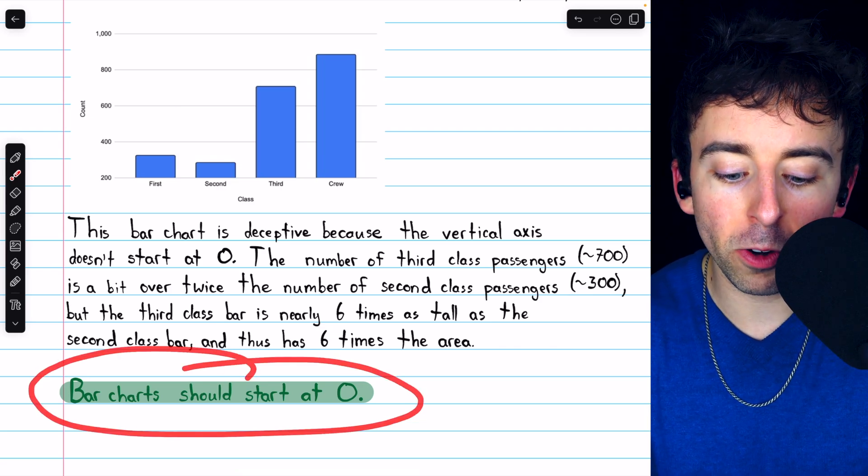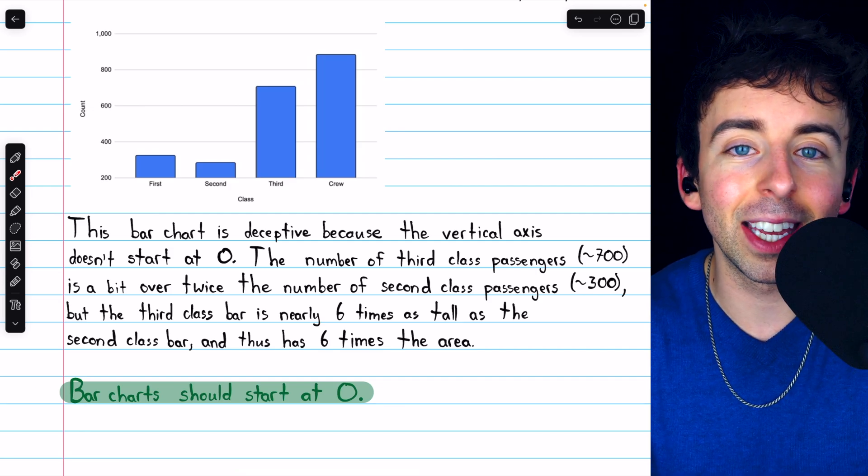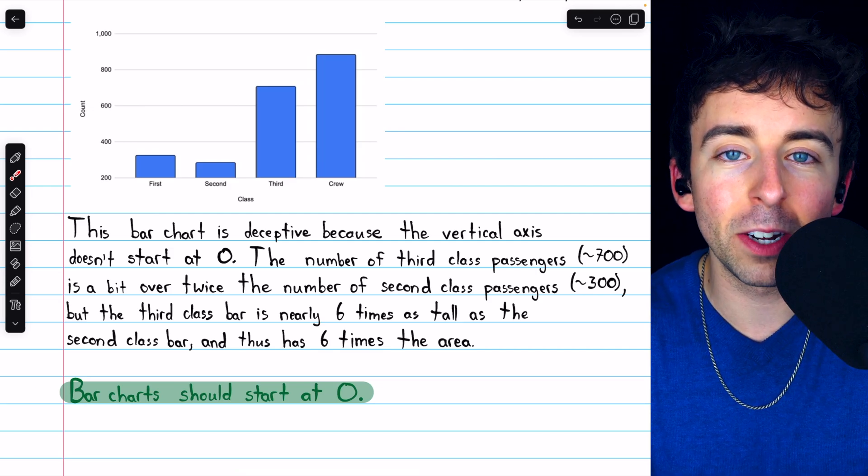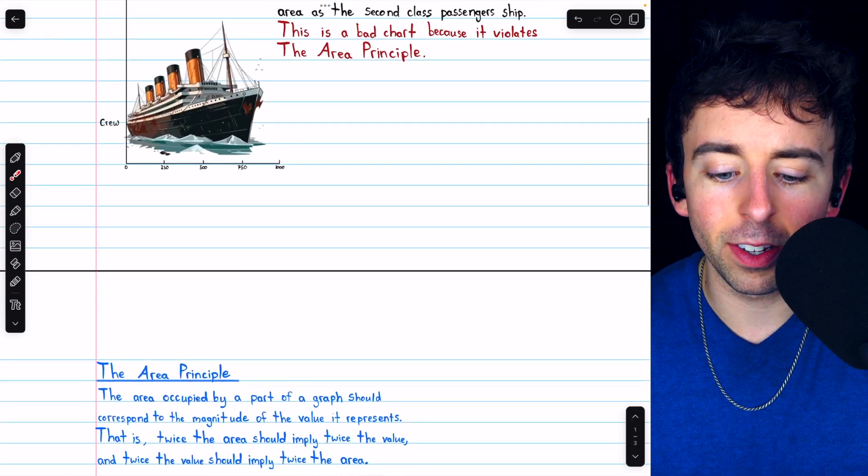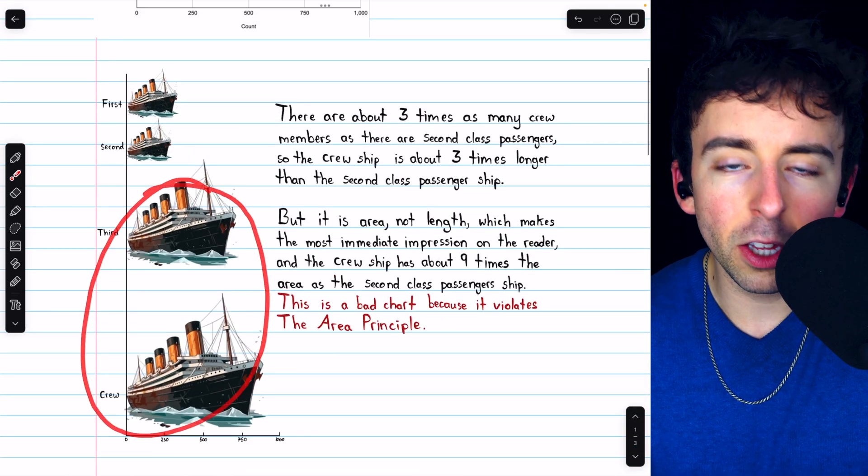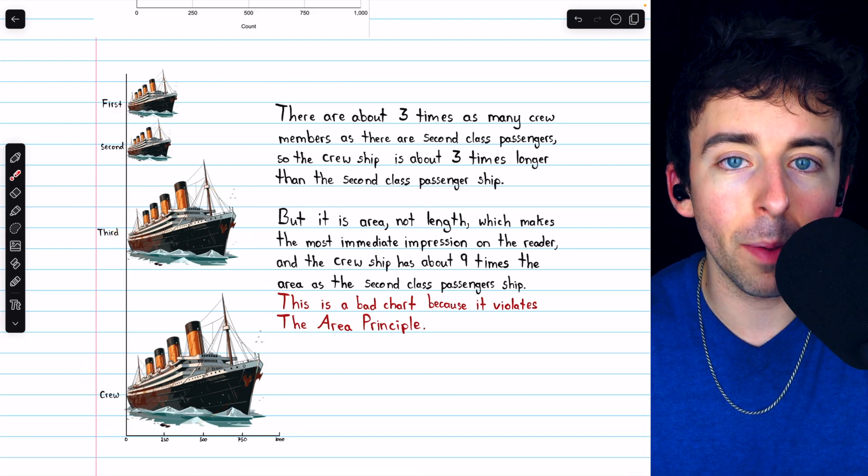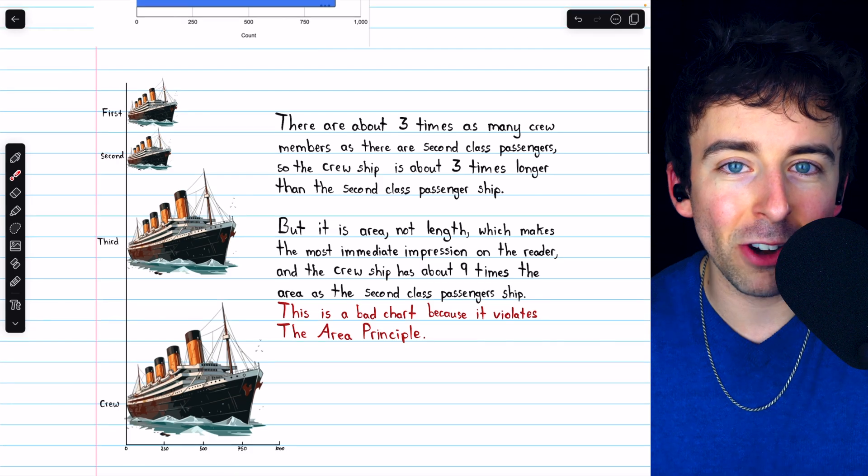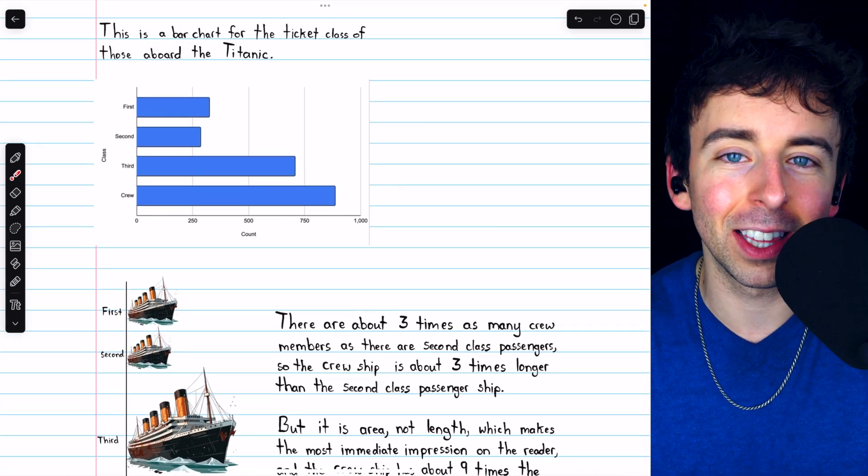So that's another rule to follow. Bar charts should start at zero. If you start somewhere else, you're risking making an incorrect impression on the reader and accidentally being deceptive. Again, both of these charts, this one that doesn't start at zero and this one with the ships, you can read it carefully and accurately and get correct information from it. But these pictures make impressions, and the impressions they make are not accurate, which really does make them bad pictures.